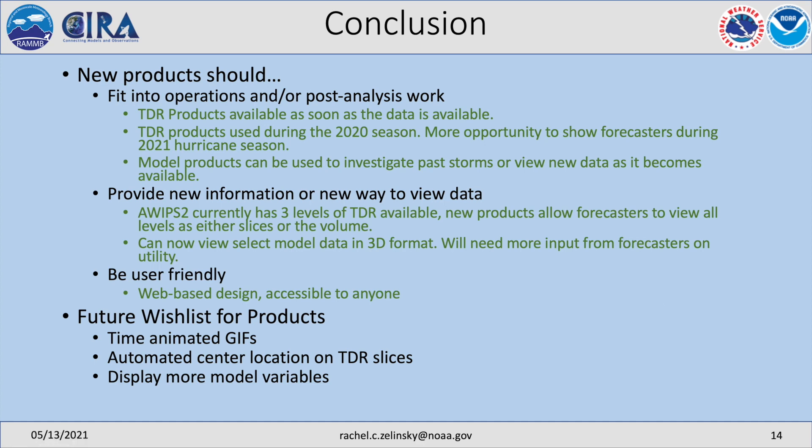Do the new products fit into the three categories listed at the beginning? During the 2020 season, some forecasters were able to use TDR products — they used the horizontal slice tool to identify tilt in Laura before it intensified. Hopefully during the 2021 season there will be more opportunities to show forecasters these tools, especially the model products, so they can evaluate the utility. A future wish list for the products is also noted, but what was shown in this presentation is most likely what you'll see throughout the 2021 season.